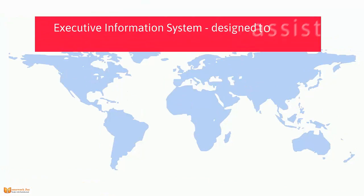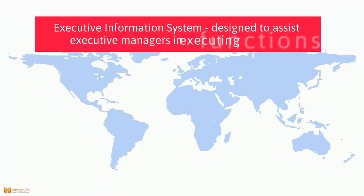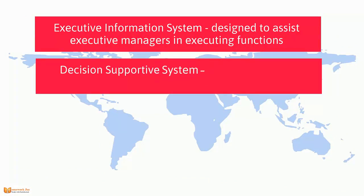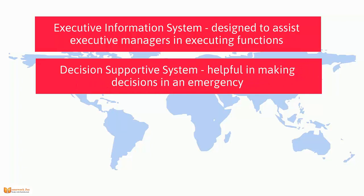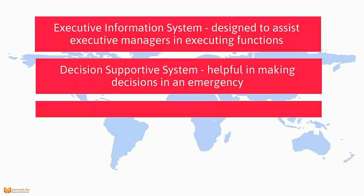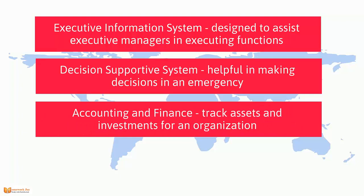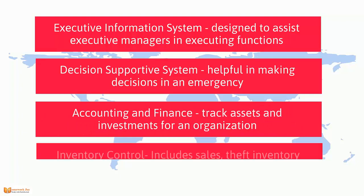Executive Information System: designed to assist executive managers in executing functions. Decision Supportive System: helpful in making decisions in emergencies. Accounting and Finance: tracks assets and investments for an organization.